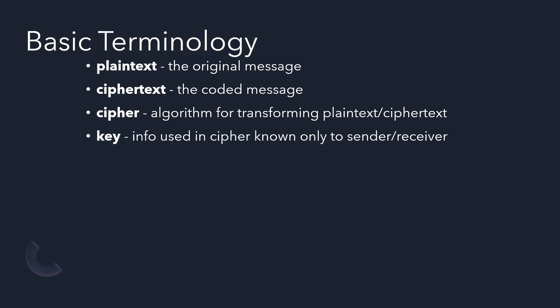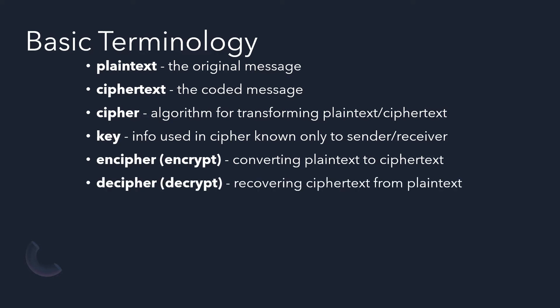The key is the information used in cipher known only by the sender or the receiver. The encipher or encrypt is a process converting plain text to cipher text. Decrypt or decipher is the process recovering cipher text from plain text.